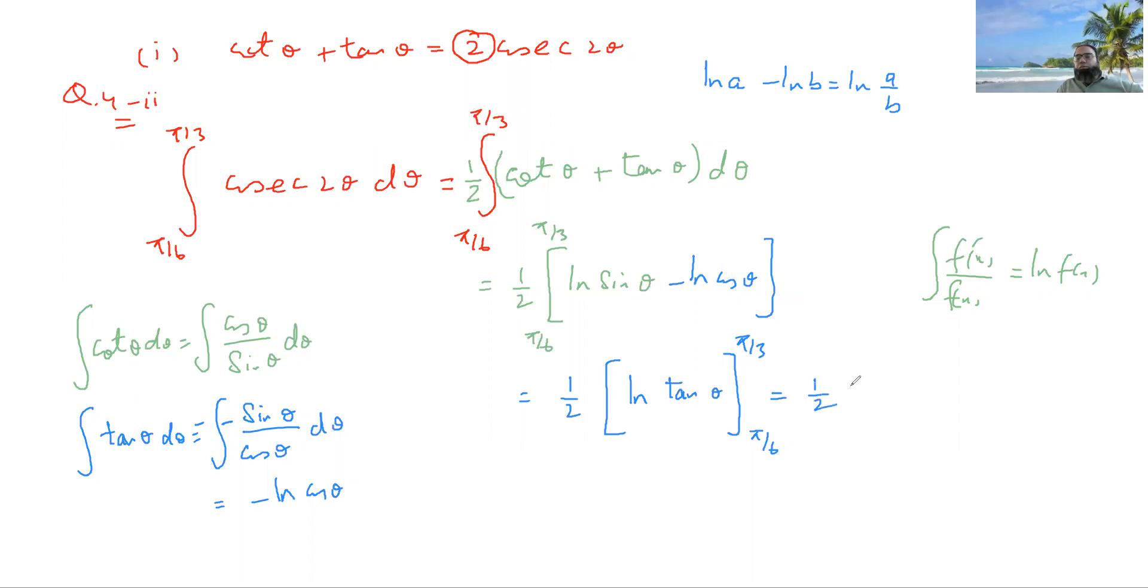This is half ln, and then tan 60, tan 60 is 1 over under root 3, no. Tan, yeah it is under root 3. And tan 30, it is 1 over under root 3. This becomes half ln 1 over root 4, and then you have to show it this.